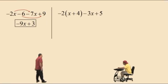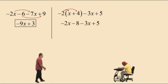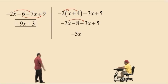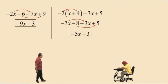Here's another problem. First, we're going to remove the parentheses by applying the distributive property. Negative 2 times x is negative 2x. What's negative 2 times 4? Negative 8. Now bring down your work and let's combine like terms. Negative 2x plus negative 3x is negative 5x — just like negative 2 plus negative 3 is negative 5 but these are x's. Now negative 8 plus 5 is negative 3. It's the same as 5 plus negative 8. And that's your result.